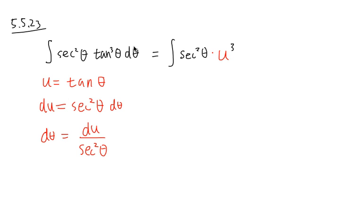And then the d theta, it's du over secant squared theta. Once again, the tangent theta becomes a u. And the third power is this right here. And here, the secant squared theta is right here. d theta is du over secant squared theta. And as we can see, these two will cancel out very nicely. And then we can proceed.